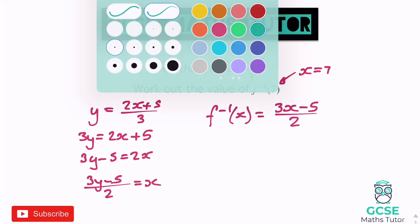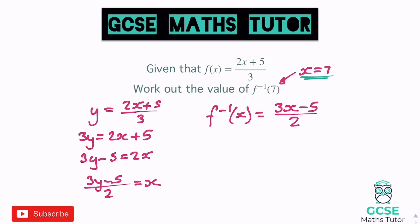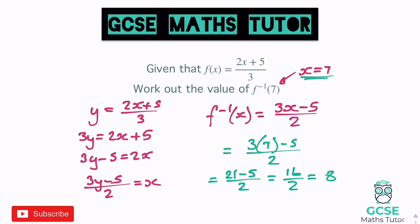Sub in x equals 7. We get 3 times 7 minus 5 over 2. 3 times 7 is 21, so we have 21 minus 5 over 2. 21 take away 5 is 16, so we have 16 over 2. And 16 divided by 2 equals 8. You might be able to do some of those steps in your head, but just showing all the process of subbing that in and getting to that final answer.